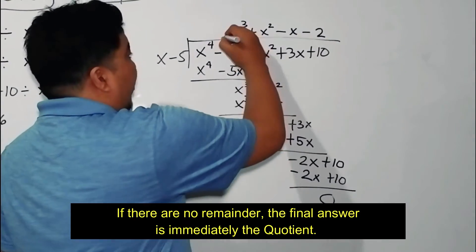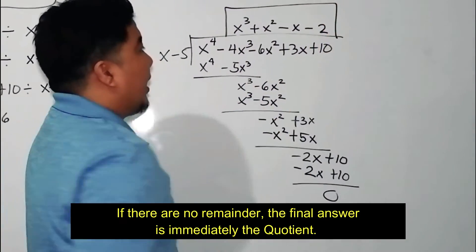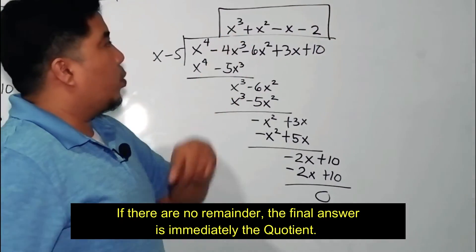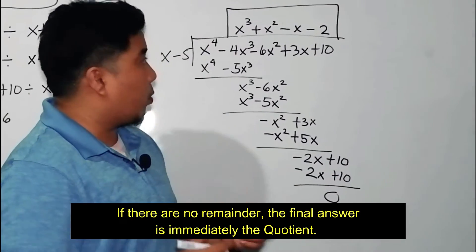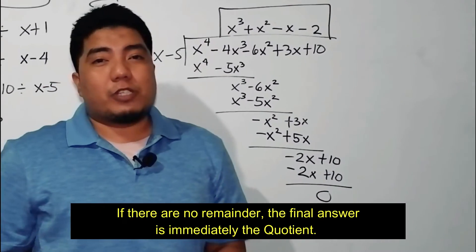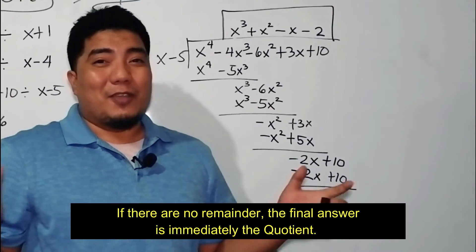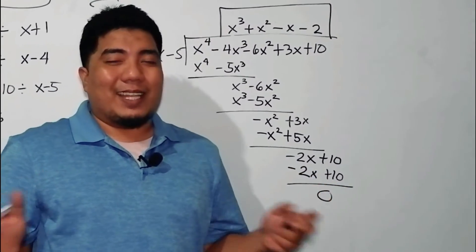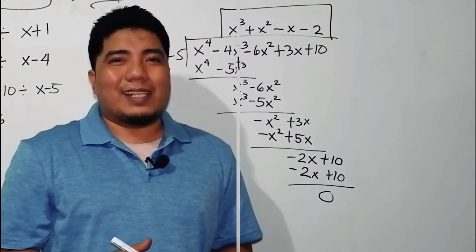This is an example where we have no remainder. Our final answer is automatically x cubed plus x squared minus x minus 2. Very easy, right? Now let us go to the fourth example.